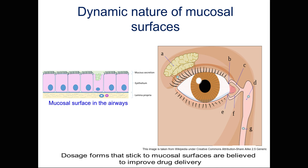It was demonstrated some time ago that dosage forms that stick to mucosal surfaces are believed to improve drug delivery. When they stick to mucosal surfaces — these dosage forms are called mucosal adhesive — they facilitate longer residence time on mucosal surfaces, so the drug molecules could have a better chance to get released from the dosage form and to get absorbed by the mucosal epithelia.